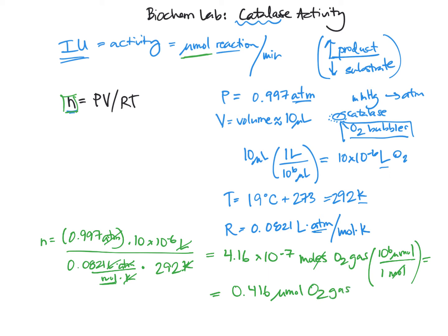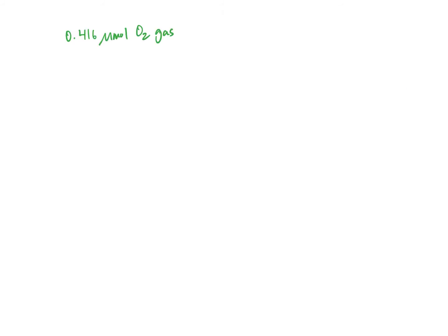Woohoo! So now we've calculated how much oxygen gas was generated by the catalase enzyme in order to lift this little disc up through the hydrogen peroxide. But in order to calculate the activity of the enzyme, we also need to consider how quickly that gas was produced. So let's take this value and we'll move on to another page of calculations.